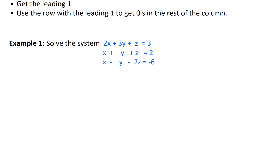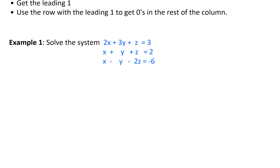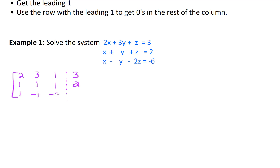For this example, we want to solve the system given by these three equations, so I'm going to put that in an augmented matrix. The coefficients for the first equation are two, three, and one, with a constant of three. The second equation gives one, one, one with a constant of two. And lastly, we've got one, negative one, negative two, and a constant of negative six.